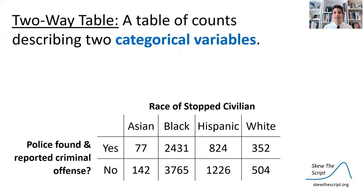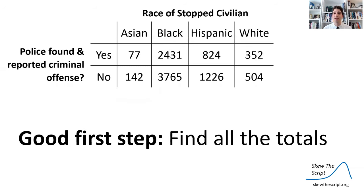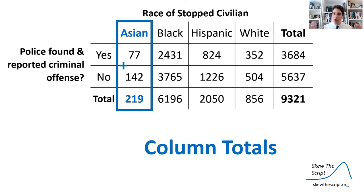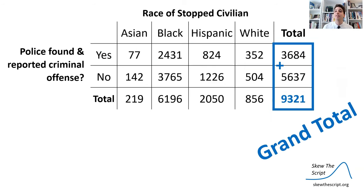This is a two-way table — a table of counts describing two categorical variables. Our two variables are the race of civilians who were stopped and whether or not police found and reported a criminal offense during those stops. A good first step is to find all the totals for the table. We have column totals — columns are vertical, like Greek columns going up and down. We have row totals — think about rowing a boat, with oars going out horizontally. And finally there's the grand total for the table, the total number of stops described in this data set. To get the grand total, you can add up the row totals or the column totals.